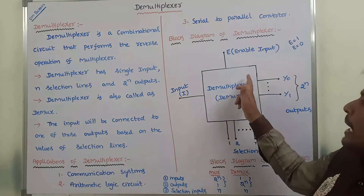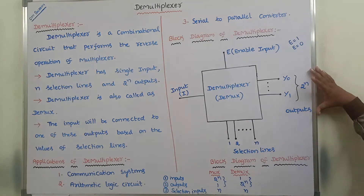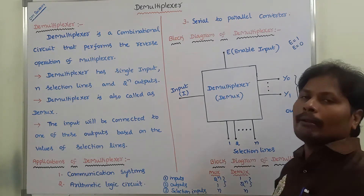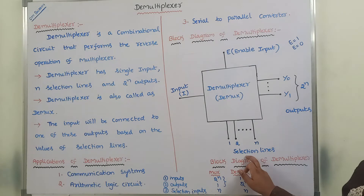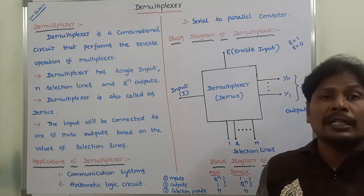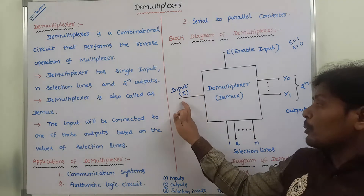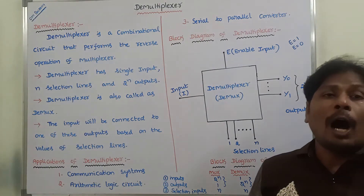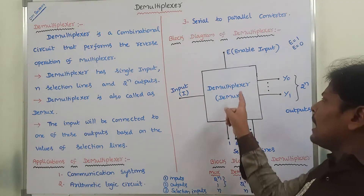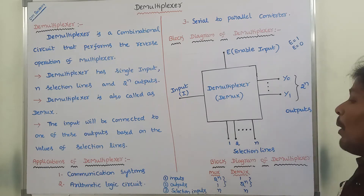A demultiplexer takes only a single input and produces 2^n number of outputs, with n number of selection lines. Using those n selection lines, we select only one output among the 2^n outputs. Whatever output is selected by the n selection lines, the input line is connected to that output line. A demultiplexer is also called DEMUX.